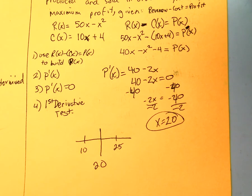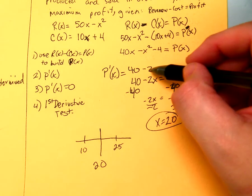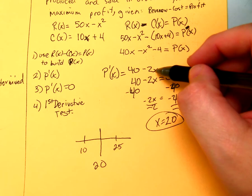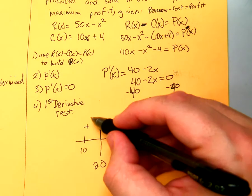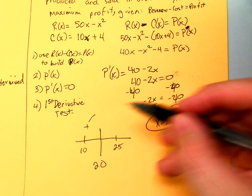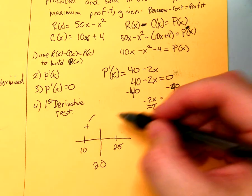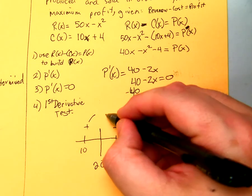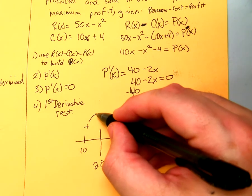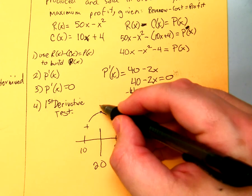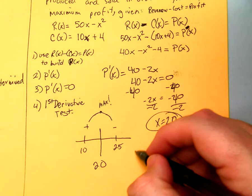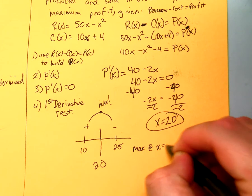So if I put in a 10, it would be 40 minus 20, which would be positive. So the graph is doing this. That's a good sign. 25, that's 40 minus 50, which is negative, which means the graph is doing this. So somewhere here we got our maximum. So we have a max at X equals 20 units.